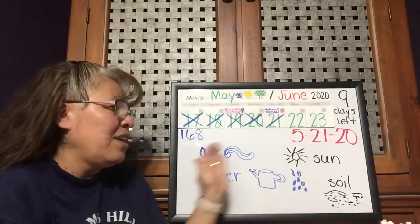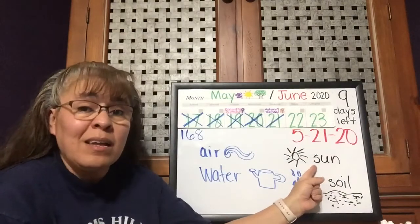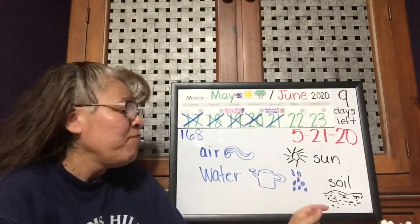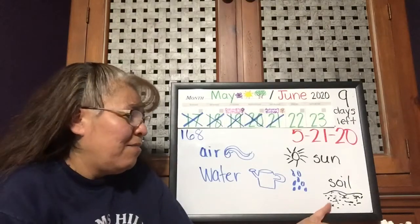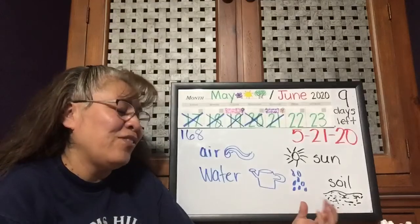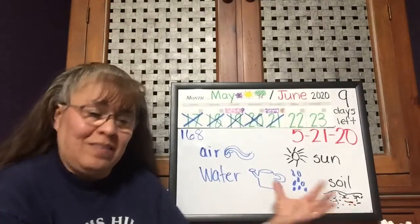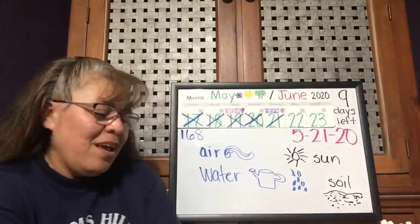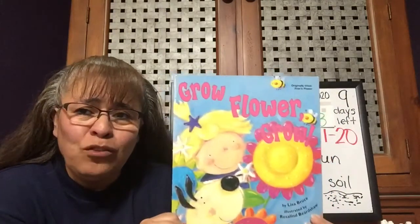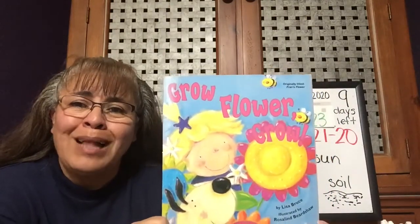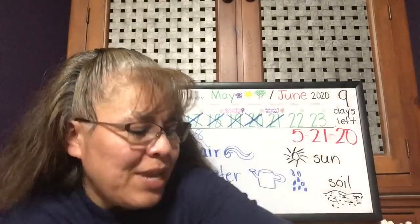So these are the four things that plants need: air, water, sun to make its food, and soil — because that's where it lives, for the nutrients, and also for the space. I'm going to quickly read this little story — 'Grow, Flower, Grow' — but wait, before I read it, I forgot. Let's see what we can remember.